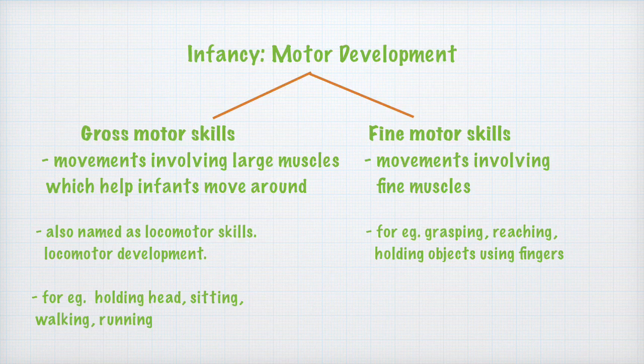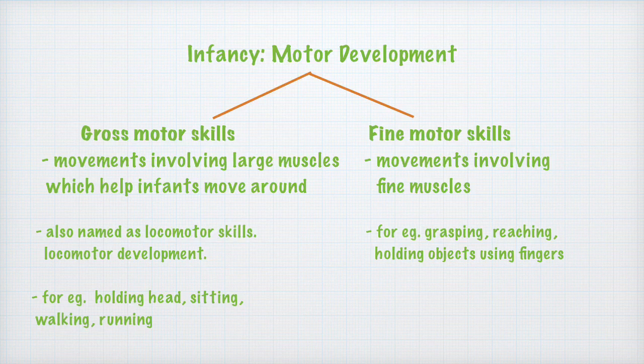Fine motor skills are movements involving the fine muscles of the infant's body. These involve movements such as grasping, reaching, and holding objects using fingers. Fine movements also help the infant to initially use a spoon and fork and to put things inside the mouth using thumb and fingers. Later on, these fine motor skills help the infant develop skills like scribbling, holding a chalk, and coloring with crayons.